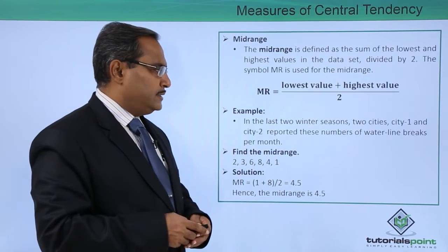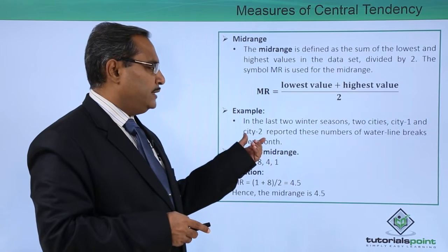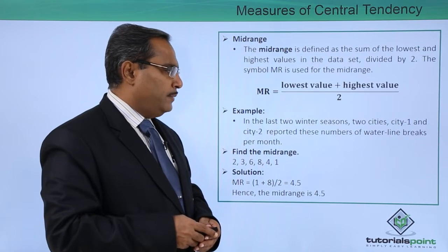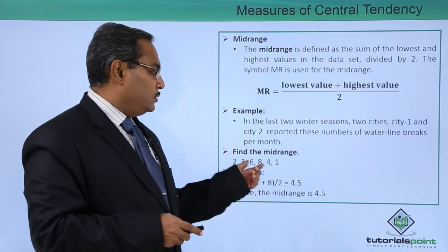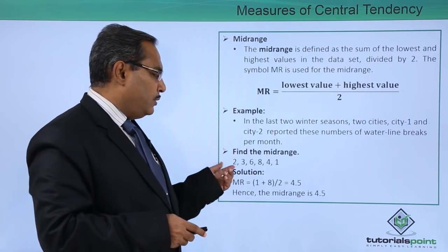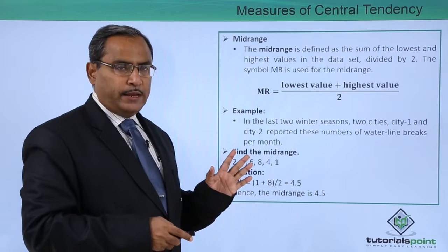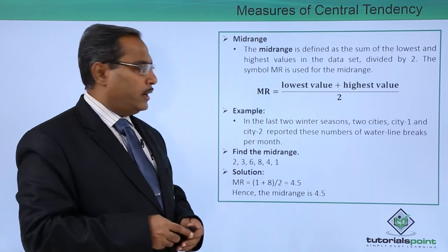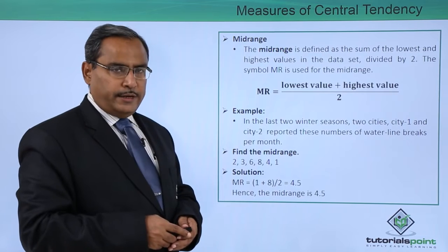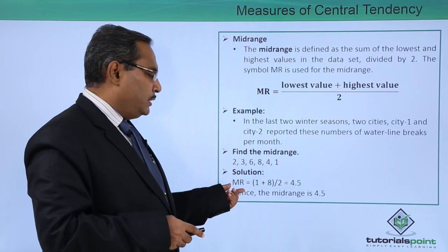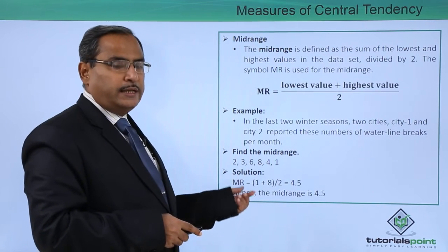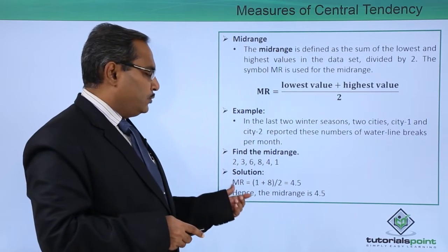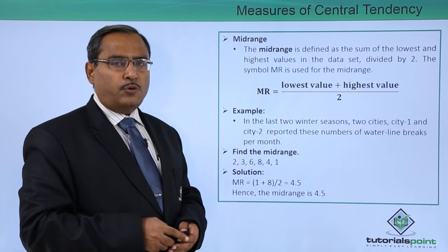For example, in the last 2 winter seasons, 2 cities — city 1 and city 2 — reported these numbers of water line breaks per month. Find the mid-range. Here we are having the set of data. I am supposed to find out the minimum value, and here it is 1, and the maximum value here it is 8. I shall calculate the mid-range: that is 1 plus 8, whole divided by 2, that is 4.5. Hence, the mid-range is 4.5.